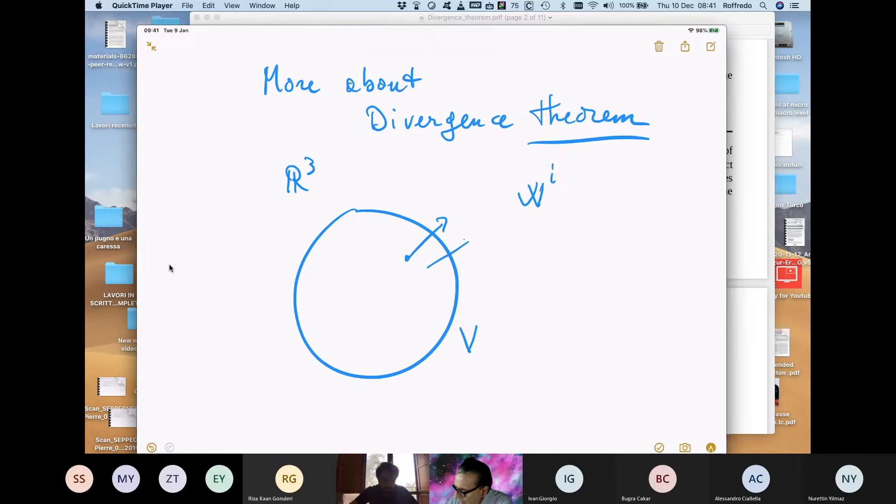And we have a vector field defined, here's this element inside in this volume. So in every point of the volume you have V of X, W of X.